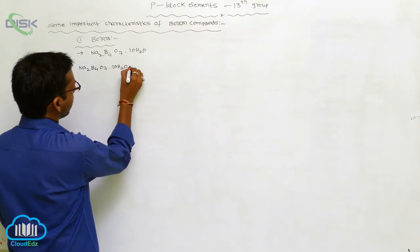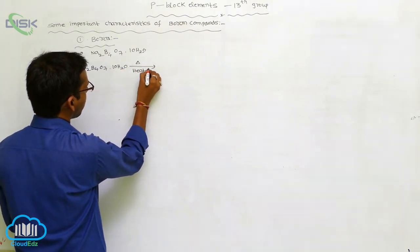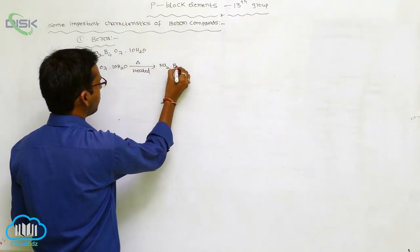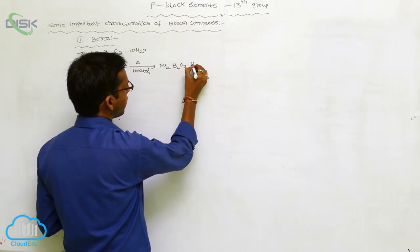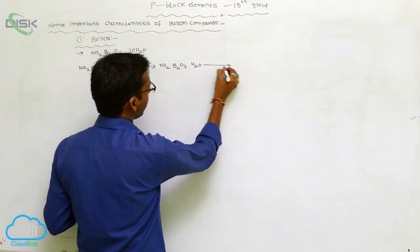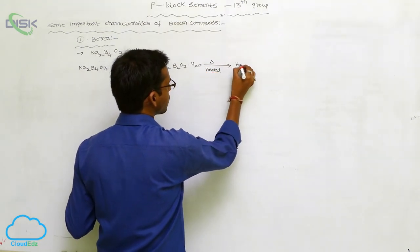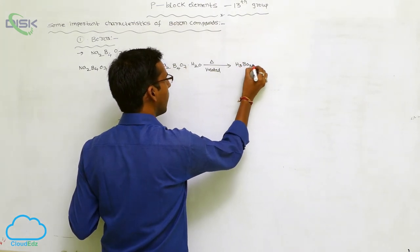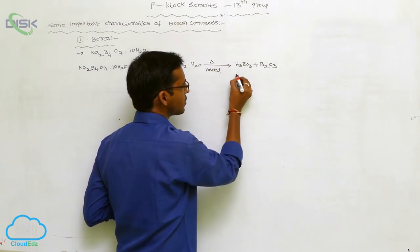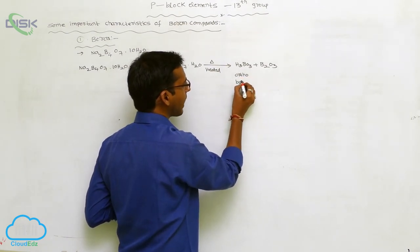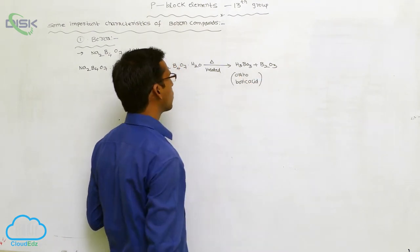Na2B4O7·10H2O is heated at a higher temperature. It produces Na2B4O7·H2O. When heated again, it gives H3BO3 plus B2O3 and remaining byproducts are formed. This H3BO3 is called orthoboric acid.